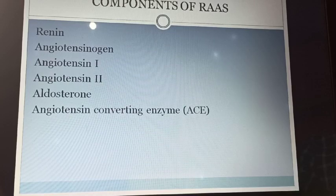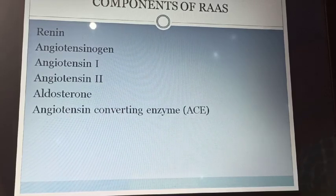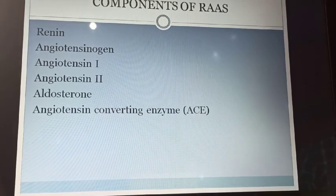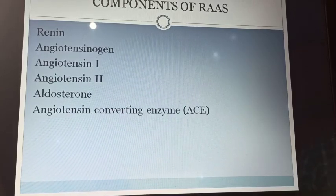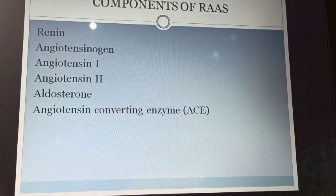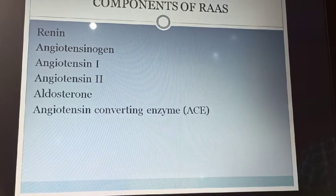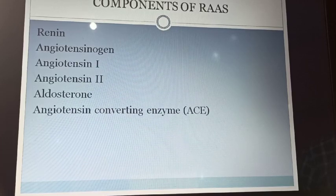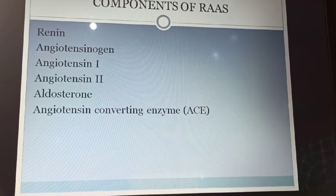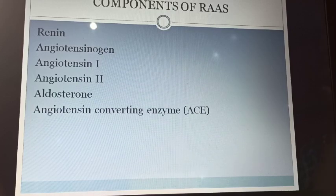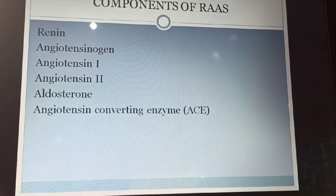Let's talk about the components of RAS. Renin is the initiator of this system. Then angiotensinogen, angiotensin-1, angiotensin-2, aldosterone, and angiotensin-converting enzyme. These are the basic components of RAS.